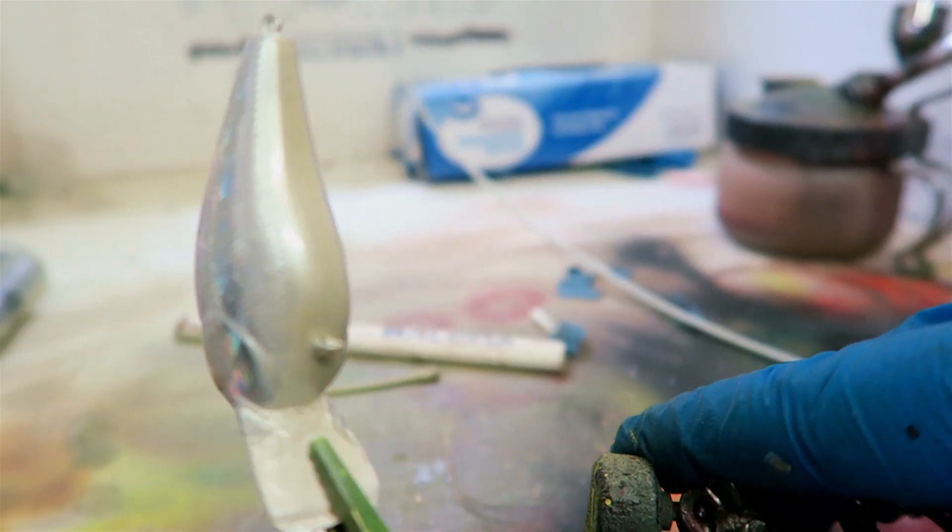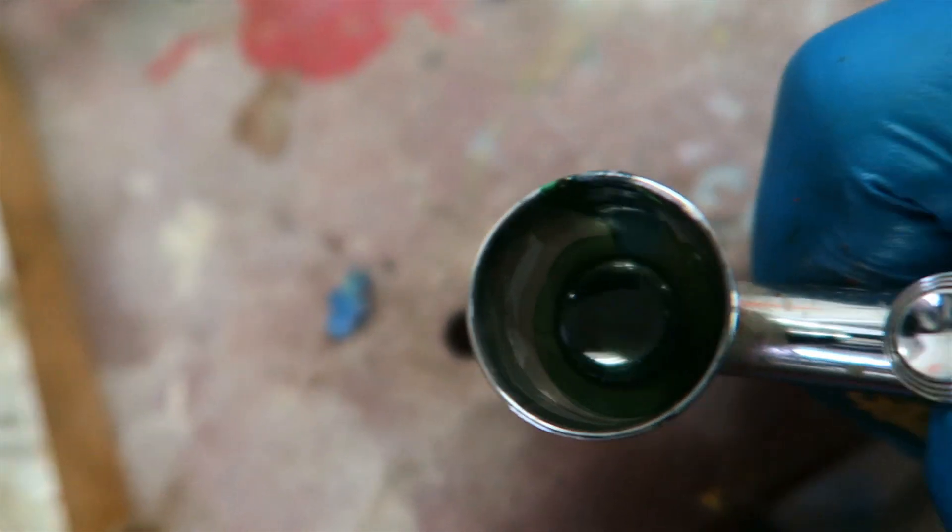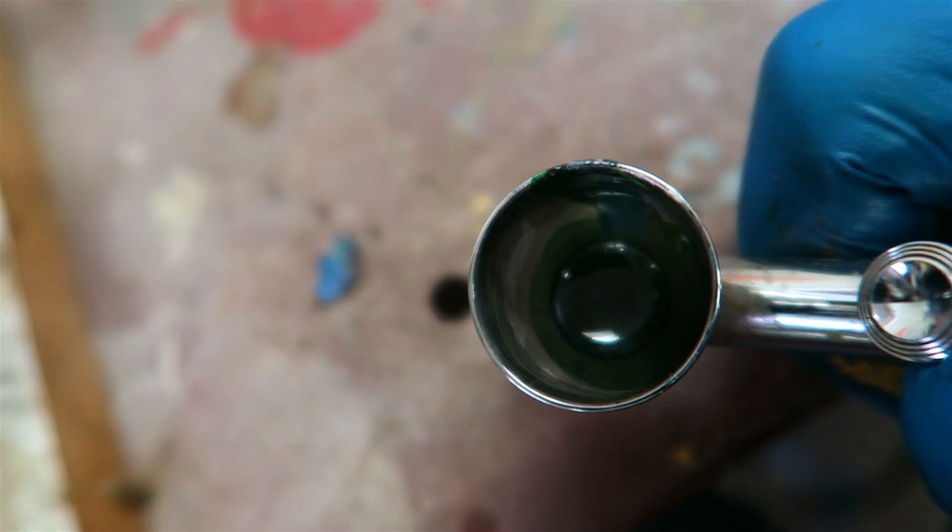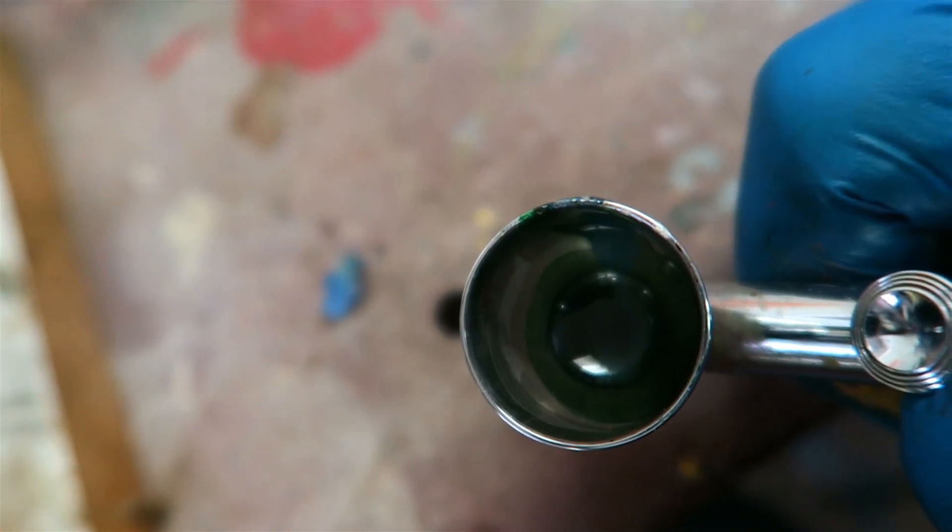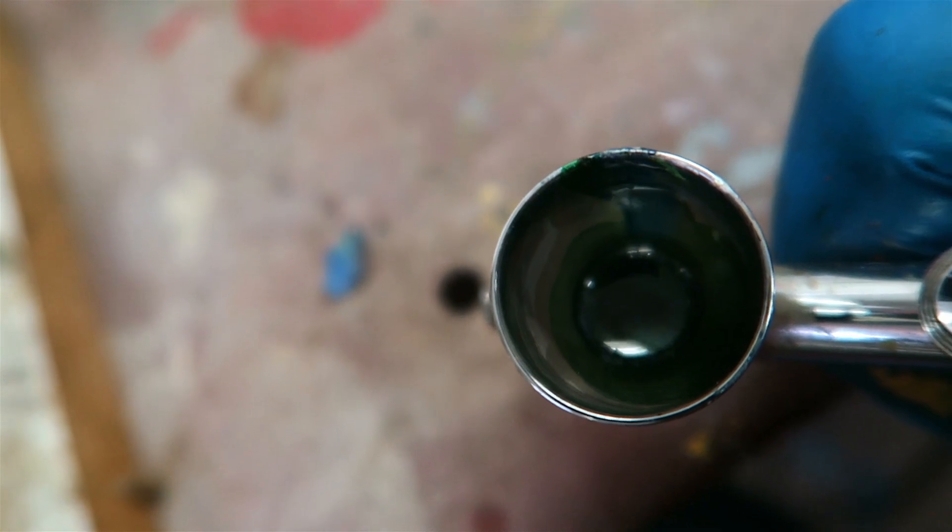You guys can see the belly on this is done and we're going to move on to the rest. I've got the magic color here, it's a color of green, blue, gray and some silver in there. I've got it all mixed up, you guys will see it, but we're going to do that as a top coat.